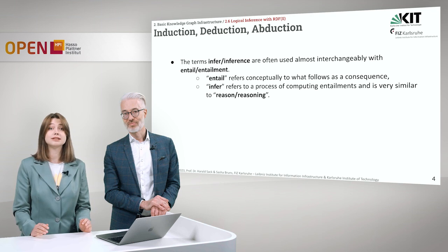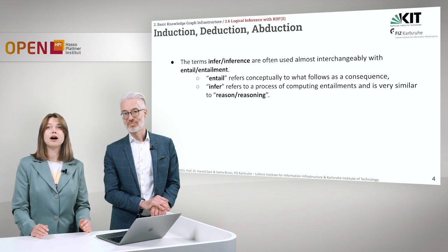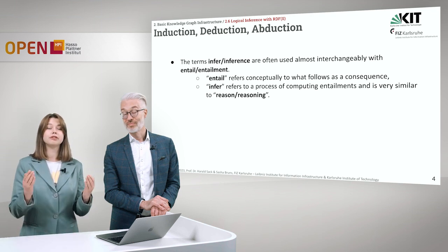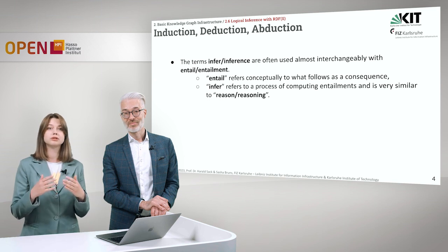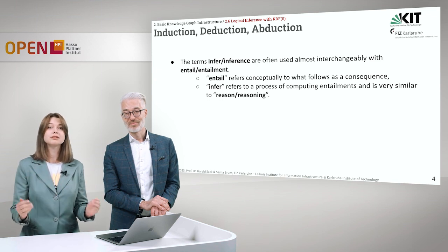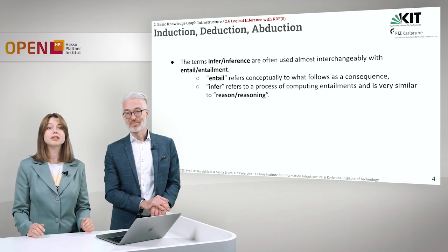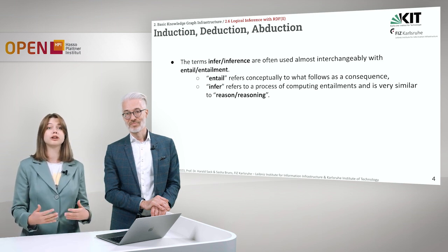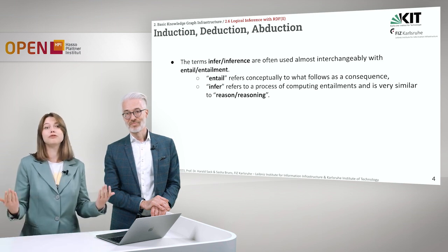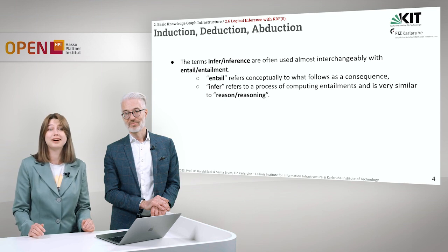Just to come back to an example, let's say there are two sentences: all students are smart and Mark is a student. What kind of new knowledge can we infer? Of course, that Mark is smart as well.